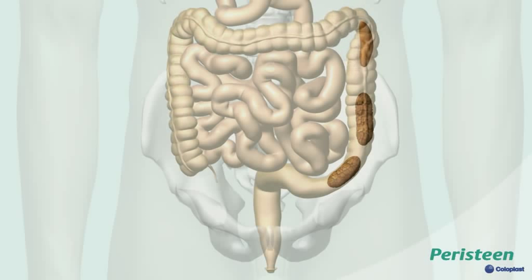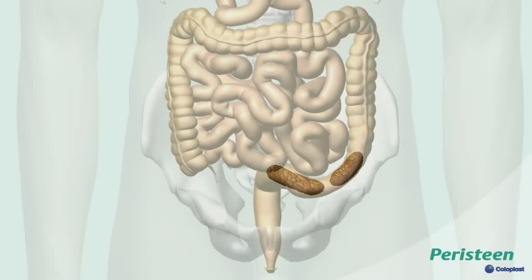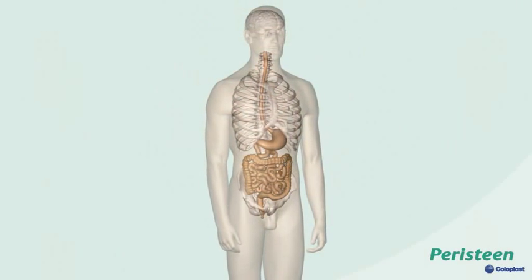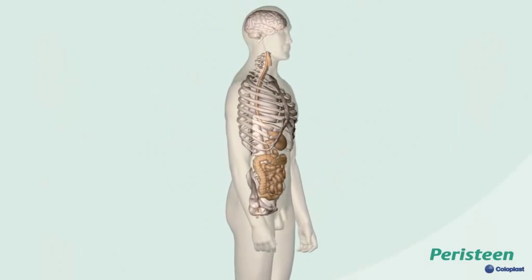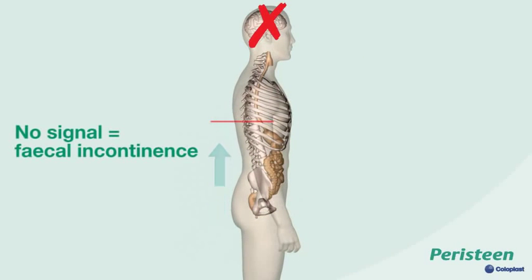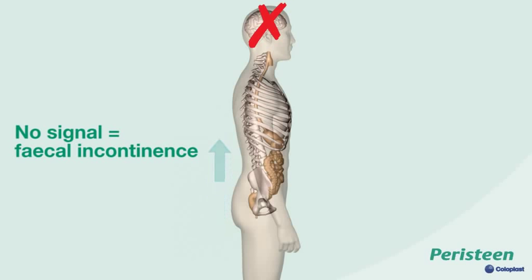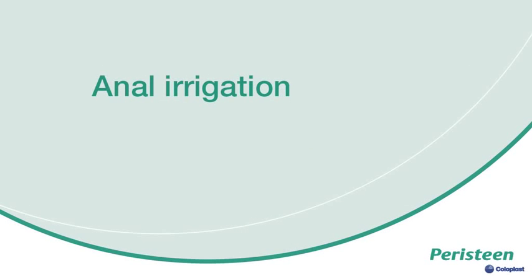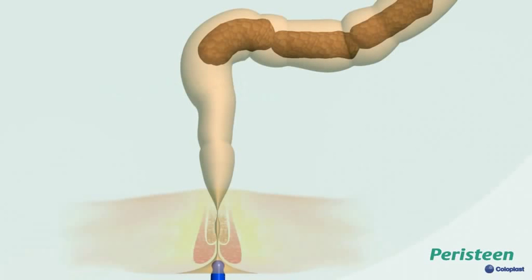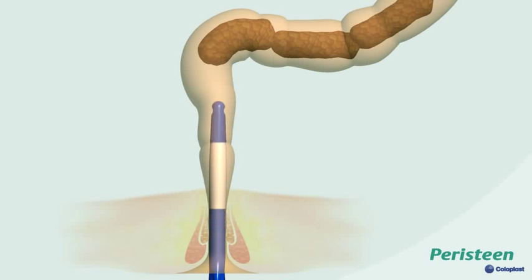Far too much water is absorbed by the large intestine and stools become hard and dry, difficult to expel despite regular bowel movements. If you have a spinal cord injury, no signal is sent to your brain. You do not register the urge to defecate and you have no conscious control of the external sphincter. As a result, you become fecally incontinent.